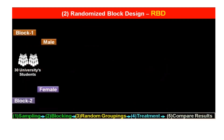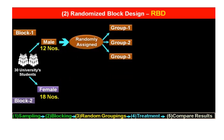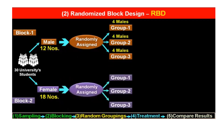So, we have taken a sample of 30 university students. Then blocking has been done — block one is male, block two is female. There are 12 male students and 18 female students. The third step is random groupings: we have randomly assigned the male students into three groups — group one, two, and three. Similarly, random groupings of female students into group one, two, and three. Four males in each group and six females in each group.